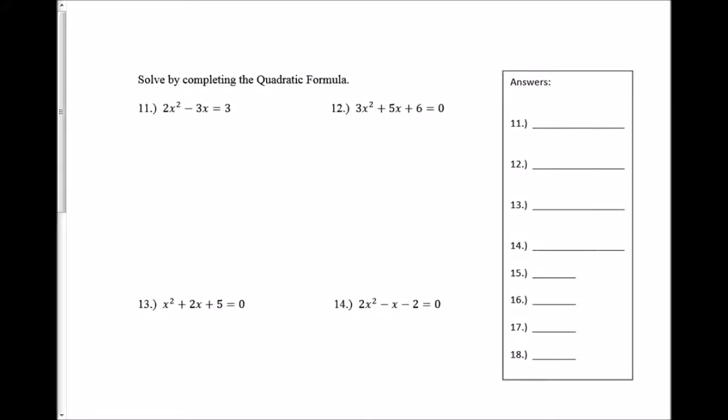In this section we're solving by the quadratic formula. Remember our quadratic formula is the opposite of b plus or minus the square root of b squared minus 4ac all over 2 times a.